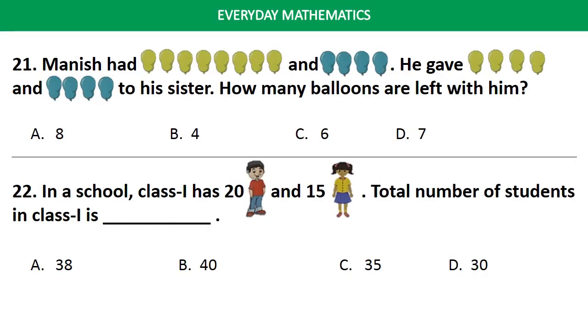Question No. 21. Manish had 8 yellow balloons and 4 blue balloons. He gave 4 yellow balloons and 4 blue balloons to his sister. How many balloons are left with him? Answer is Option B. 4.